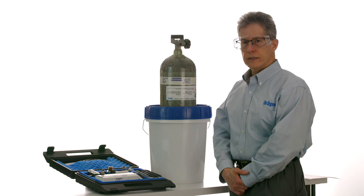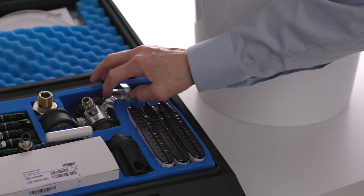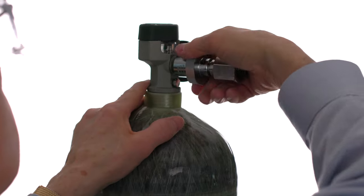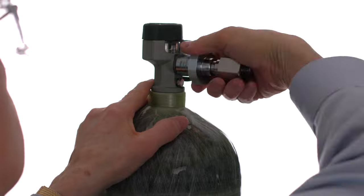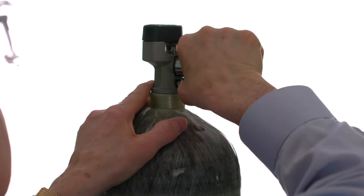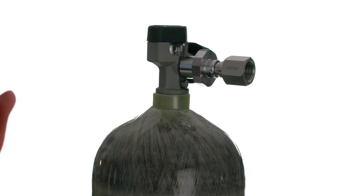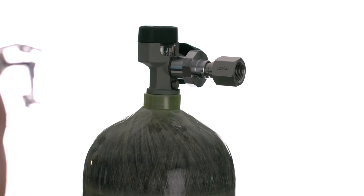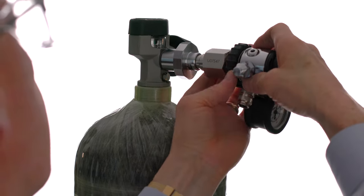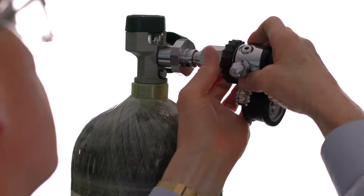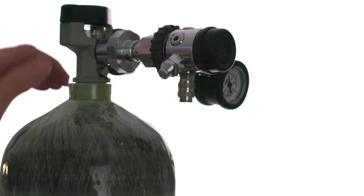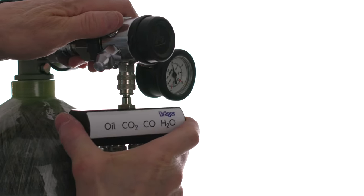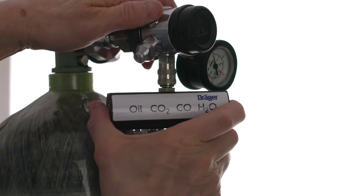Now we'll connect the Aerotest to an SCBA cylinder. Start by attaching the CGA347 adapter directly to the cylinder valve. Simply hand-tighten the adapter, don't use a wrench. Next, connect the pressure reducer to the adapter using the hand-wheel to tighten it. Connect the measuring device to the pressure reducer using the Quick Connect fitting and the Aerotest assembly is complete.